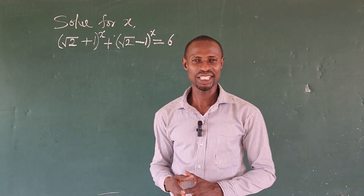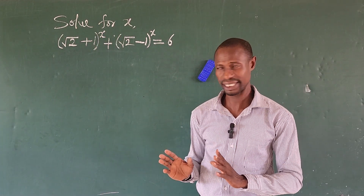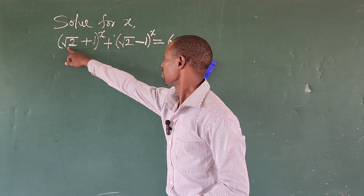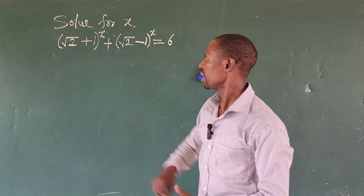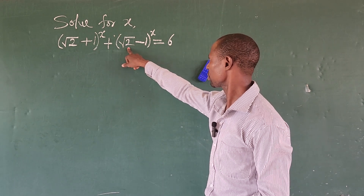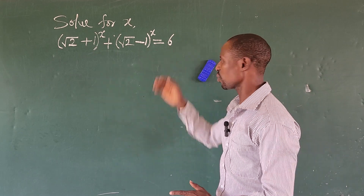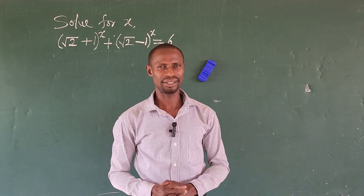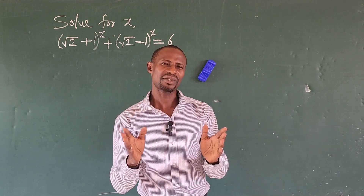Hello everyone, welcome to today's challenge. Today we have a very nice exponential challenge. The question reads: solve for x if bracket (√2 + 1) close bracket to the power of x plus bracket (√2 - 1) close bracket to the power of x is equal to 6. What would be the value or values of x in this challenge?